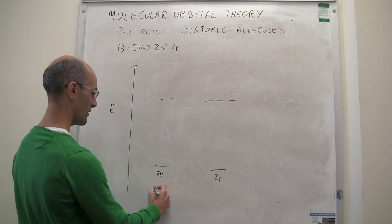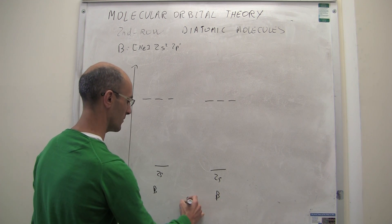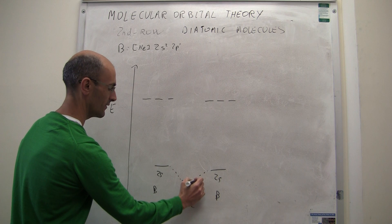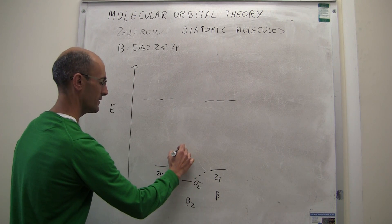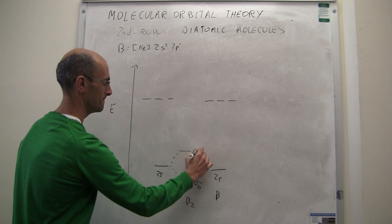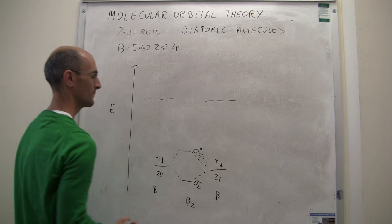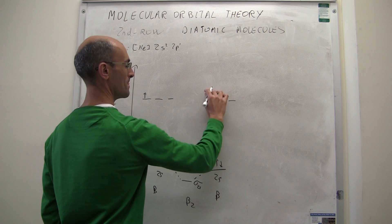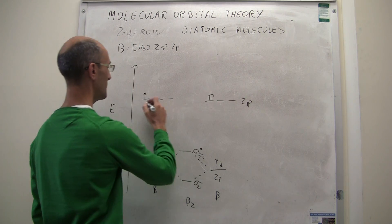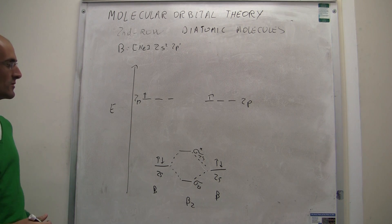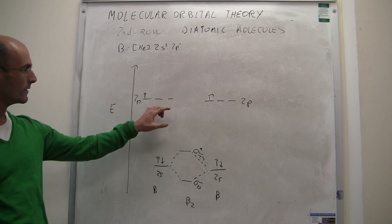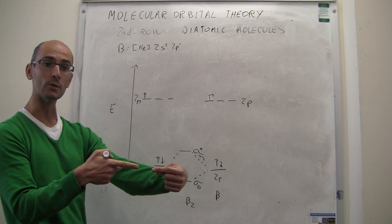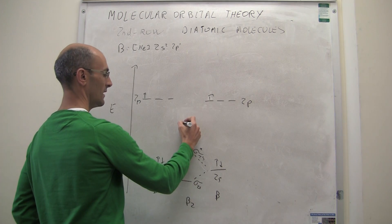So that will be your boron atom and this will be your boron-2 molecule. We have the sigma 2s bonding orbital and the sigma 2s antibonding orbital, with the corresponding electron occupation. Two of the p orbitals — the ones along the nuclear axis — are going to give rise to a sigma 2p bonding and a sigma 2p antibonding molecular orbital.